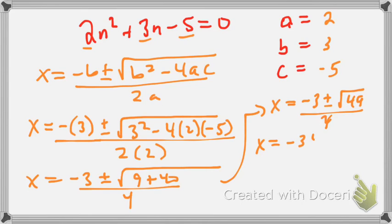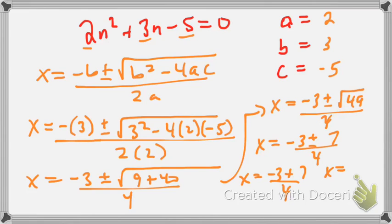So X equals negative 3, plus or minus — 40 plus 9 is 49 — so the square root of 49, all over 4. That gives us negative 3 plus or minus 7 over 4. So we're going to have two answers. X equals negative 3 plus 7 over 4: that's 4 over 4, which equals 1.